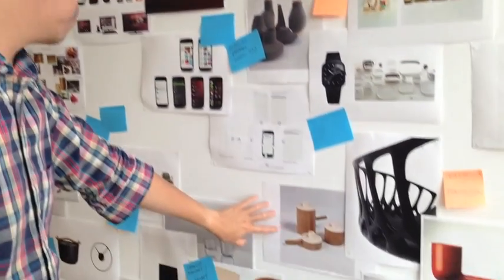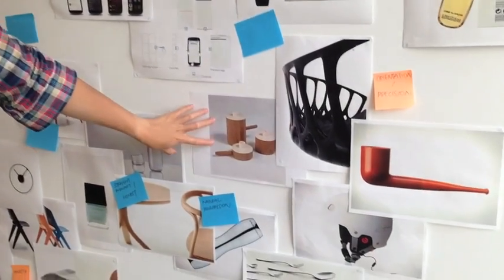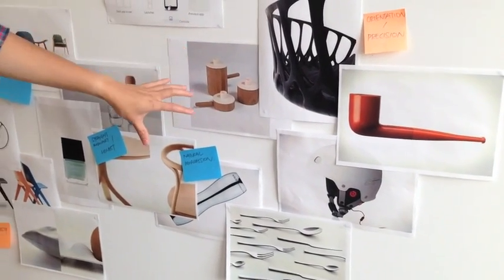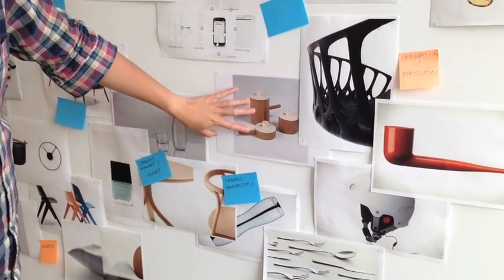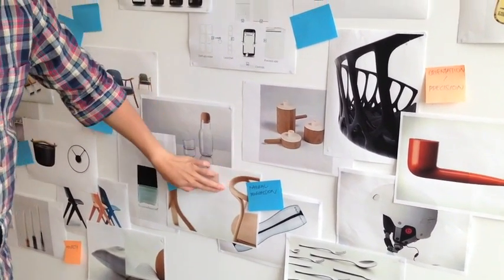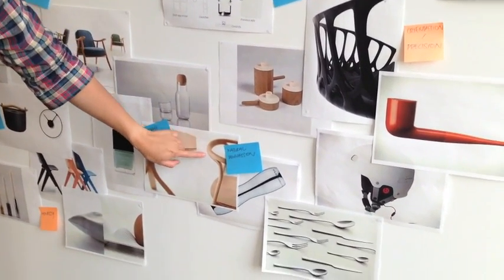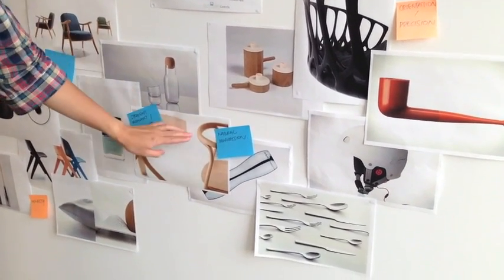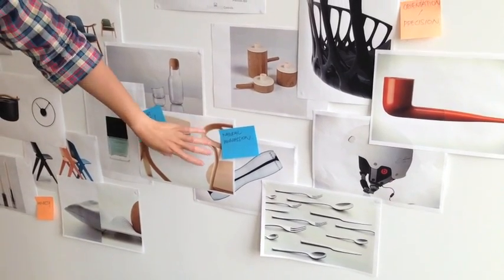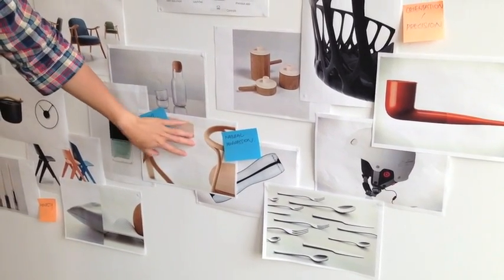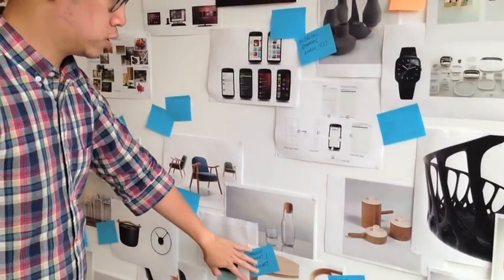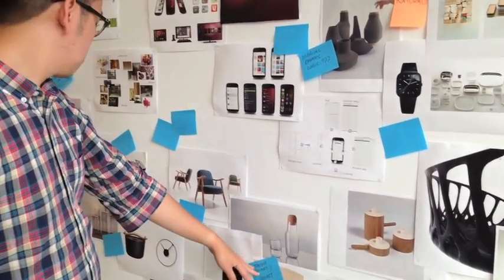Then we went on to something a bit more organic, where maybe the material that we choose should speak for the form itself as well. For example, here, how the wood kind of splits into it, carrying the characteristic of the material itself. So there was quite a lot of interesting study there.